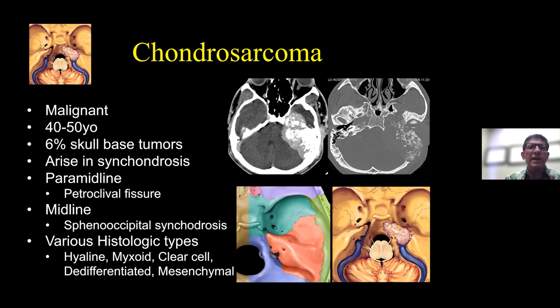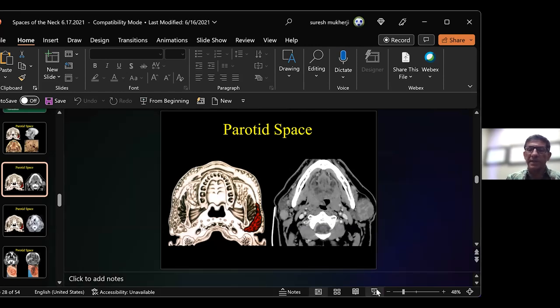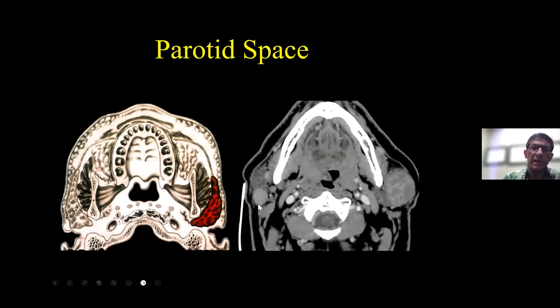The next question is: how do you differentiate between pleomorphic adenomas and Warthin's tumors? This actually came up yesterday in the tumor board I attend. Warthin's tumors — the other name, if you remember this — is called cystadenoma lymphomatosum. The lymphomatosum means that it actually arises from lymphoid tissue.